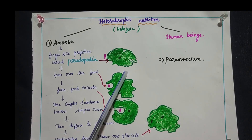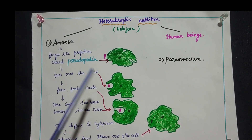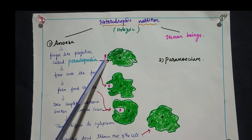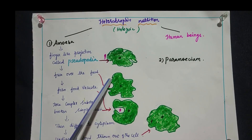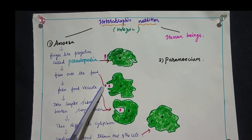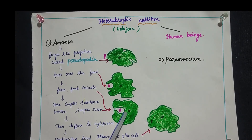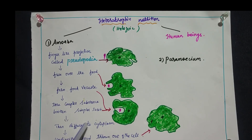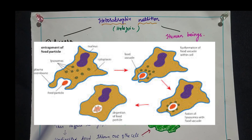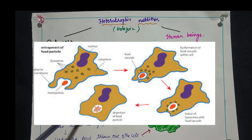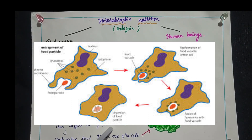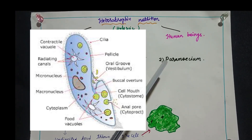Amoeba has finger-like projections called pseudopodia all over the surface of its body. When amoeba comes in contact with a food particle, it forms a food vacuole. Inside the vacuole, the complex substance is broken down into simpler substances, which then diffuse into the cytoplasm. The undigested food is thrown out of the cell.